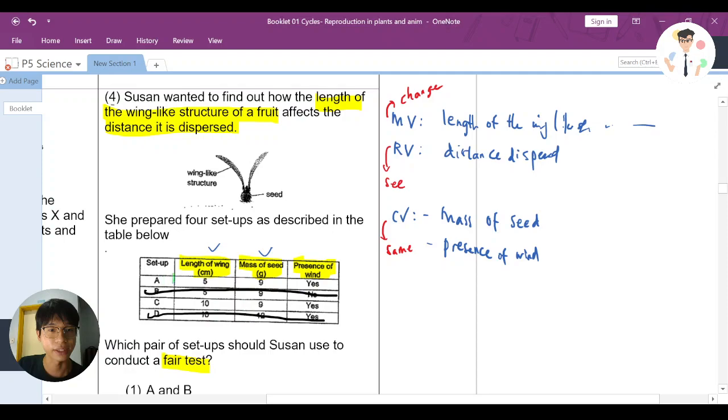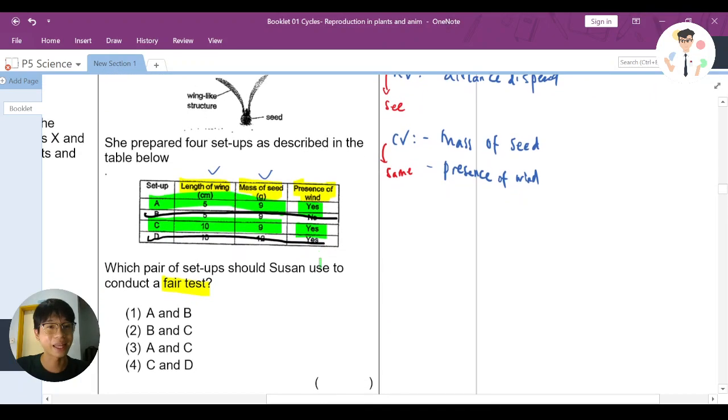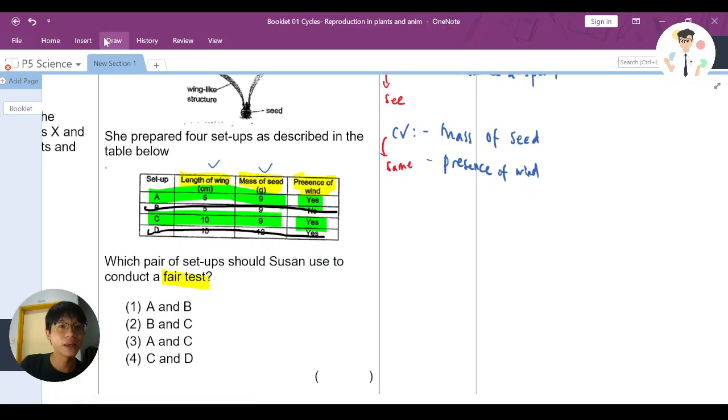So it's only left with A and C. Let me just quickly highlight A and C and we make a comparison here. So A and C, the length of the wing is MV, which is manipulated variable, which is something that can be changed. Yes, right, because we need to change it so that we can test. RV, we are checking the distance. And the mass of the seed is the same. It also has the presence of wind. So for question four, the answer is set A and C. And in this case is option number three.